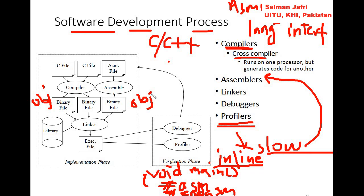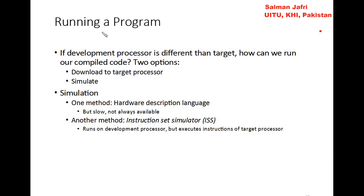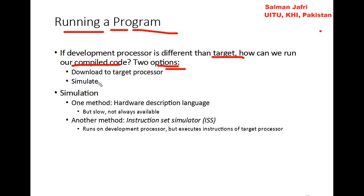After developing the program, we go to the steps to run the program on the target processor. Since the development processor is different from the target processor, we have two main options: we can download the code to the target processor, or we can simulate the code.